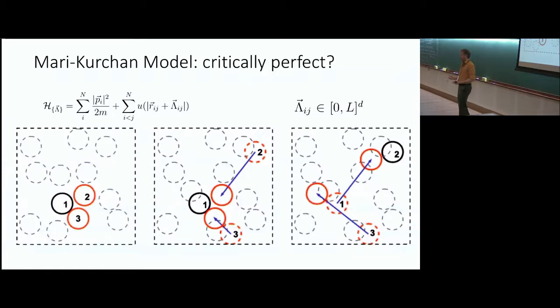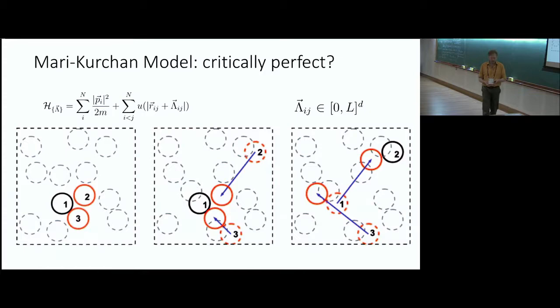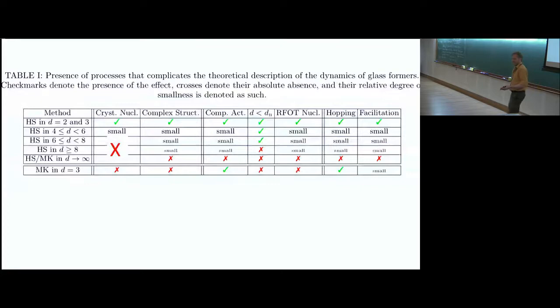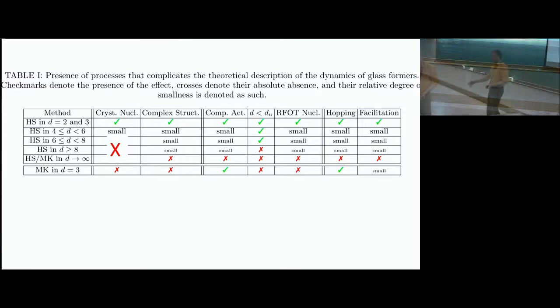The MK model does not have any crystal nucleation, does not have a complex structure, and doesn't have finite dimensional criticality. It has mean field criticality because it doesn't have an RFOT-like nucleation. One of the original motivations was that you'd be able to see pure dynamical criticality in a model you can simulate. But it turns out — without burning all my punches — this is not what we're going to see. Instead, what it's going to reveal is another type of activated processes that interfere with the dynamical slowdown.